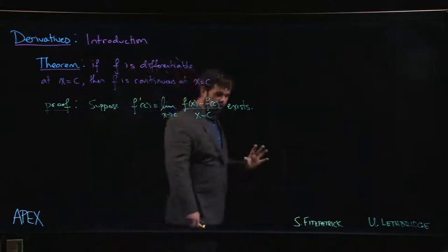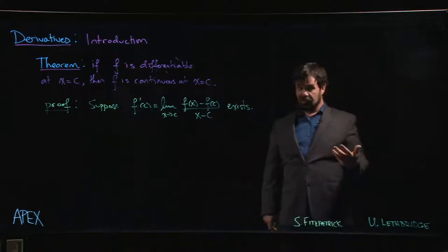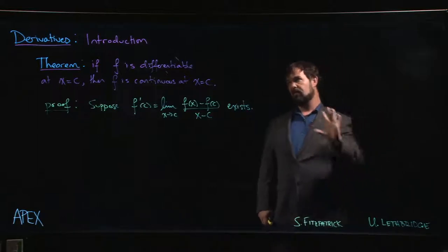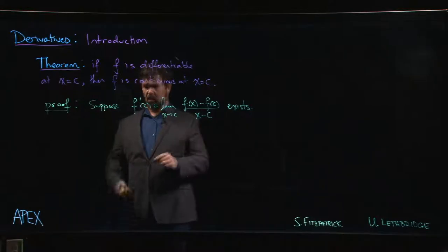And the claim is that this can't exist unless your function is continuous. Now, be careful that you don't read this the wrong way. A lot of students will mix this up and assume that this is saying that every continuous function is differentiable, but it's not saying that. It's saying that every differentiable function is continuous, and we're going to see why.